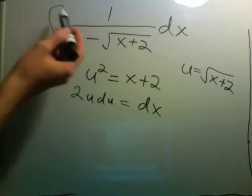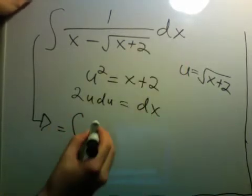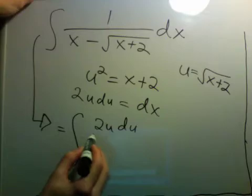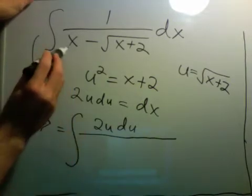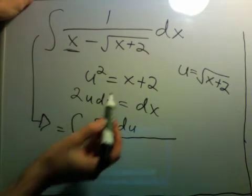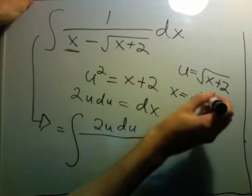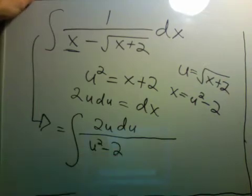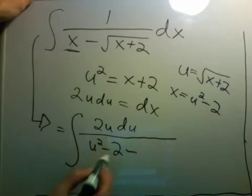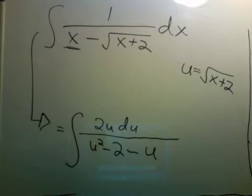Now I can plug that in up here. dx is 2u du, and for the bottom, I have this x. The way I can express that in terms of u is to use this relationship: x is u squared minus 2. And then we're subtracting the last part, which is just u. So this is now a rational function, and we know how to do this.